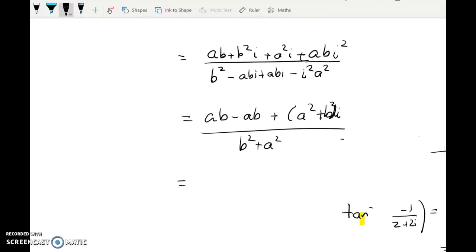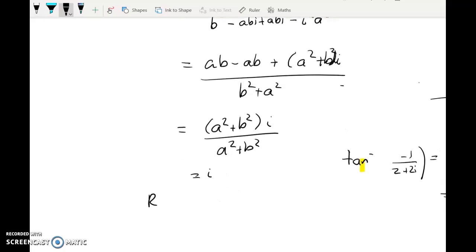So this actually is much more than just being purely imaginary. It simplifies down to give me just i because we've got a squared plus b squared i over a squared plus b squared, which is i. And the real part of i is equal to zero. So it's purely imaginary. Okay, so that's that one done.